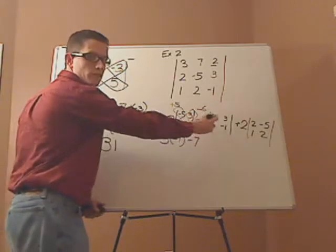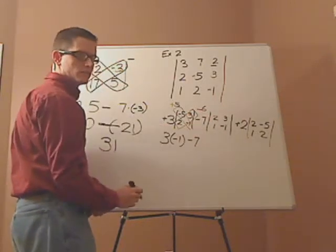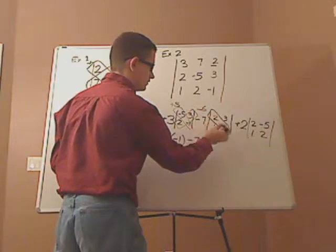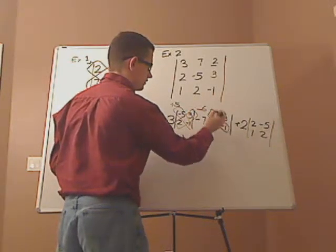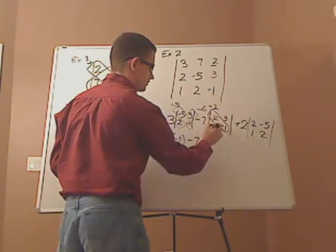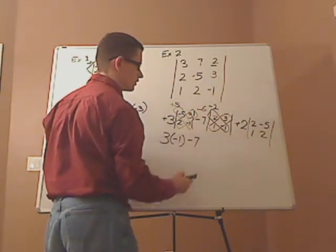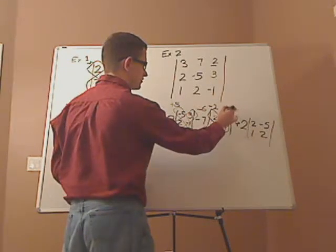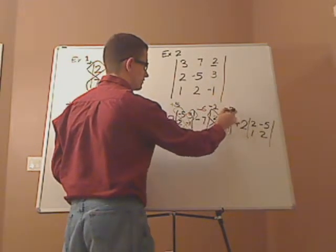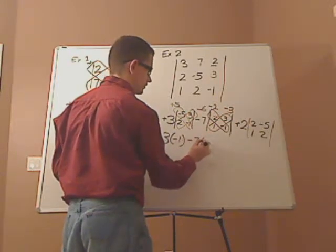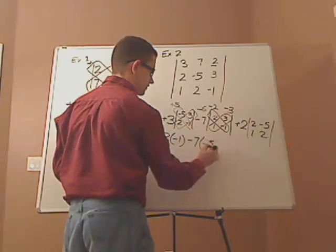Now you do this determinant. 2 times negative 1 stays the same, so it's negative 2. Then 1 times 3 is 3, and that's going to be negative. So you have negative 2 minus 3, which gives you negative 5.